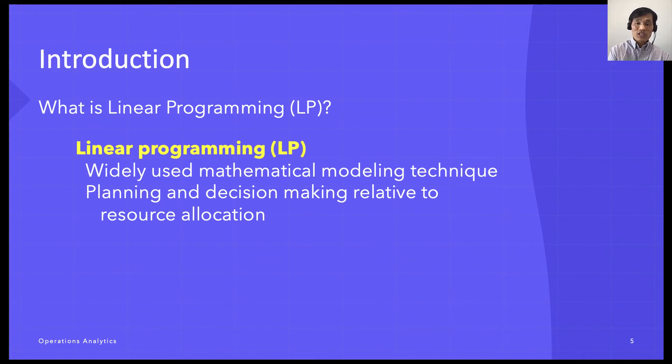Linear programming is an optimization technique for a system of linear constraints and a linear objective function. An objective function defines the quantity to be optimized, and the goal of linear programming is to find the values of the variables that maximize or minimize the objective function.